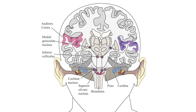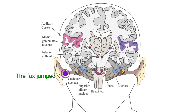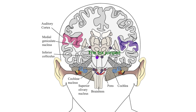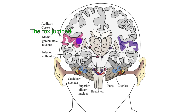The primary auditory pathway begins with the auditory receptors in the inner ear, which lead to the cochlear nucleus, then the superior olivary, then the inferior colliculus, then the medial geniculate nucleus, and then finally to the auditory cortex.